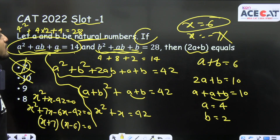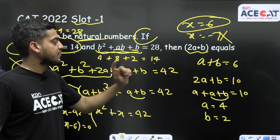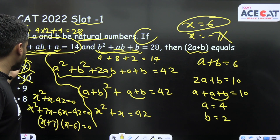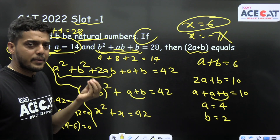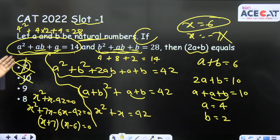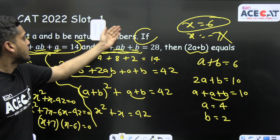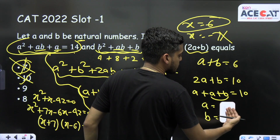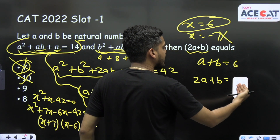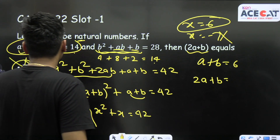On putting a = 4, we are getting 28 in the first equation and 14 in the second, which are reversed. If we reverse the values — a = 2, b = 4 — we will get the correct assignment. So option B cannot be correct.